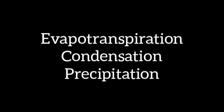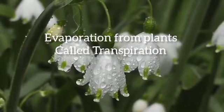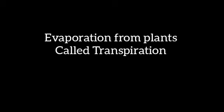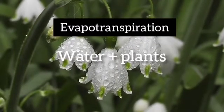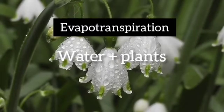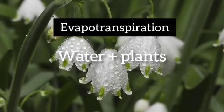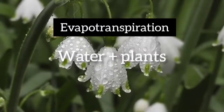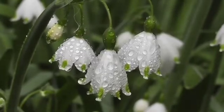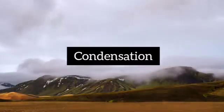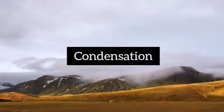There are three key terms used in the water cycle: evaporation, condensation, and precipitation. When evaporation takes place from plants, it is called transpiration. Evapotranspiration is the process in which both water bodies and plants are involved.